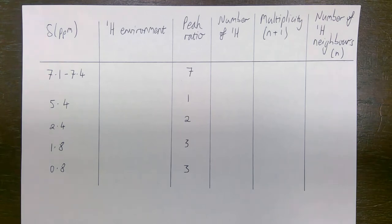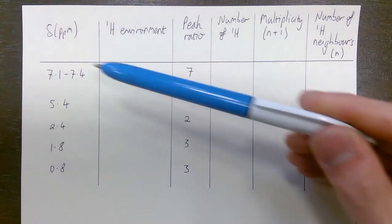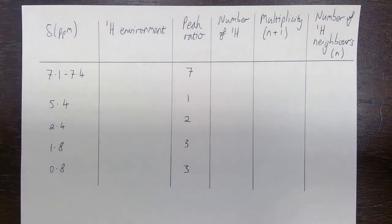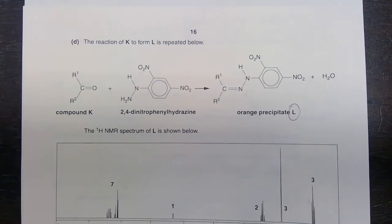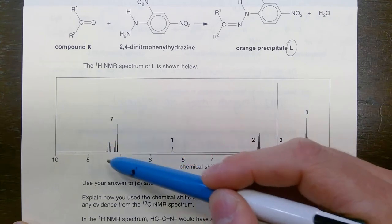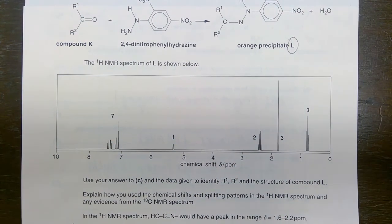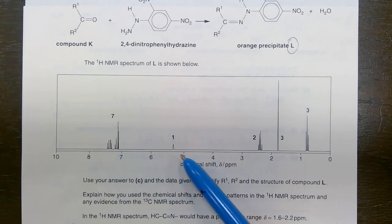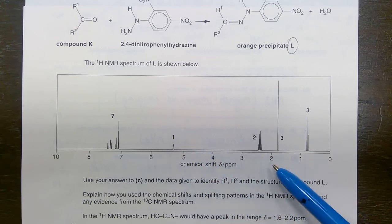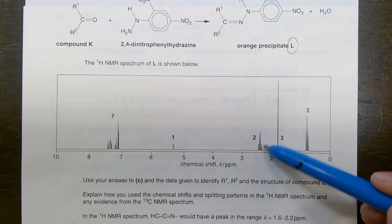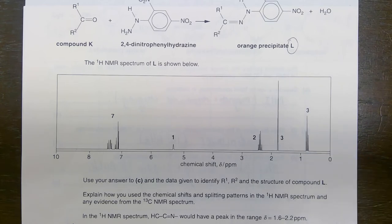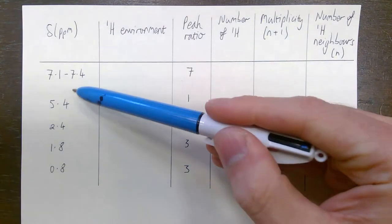All I've done is gone through the NMR spectrum and added the chemical shift values. You can see I've got a group of peaks around about 7.3 to 7.4 parts per million, a peak around about 5.3 to 5.4 parts per million, a group of peaks around about 2.3 to 2.4, and then 1.8 and 0.8. That's all I've got in this column.